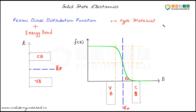In n-type material, we know that free electrons n0 is greater than the number of holes p0 in the material. So n0 greater than p0 means there should be more probability of finding electrons in the conduction band than finding holes in the valence band. We should have more probability here and less probability here. We can visualize that by moving the Fermi level closer towards the conduction band.